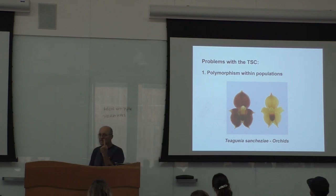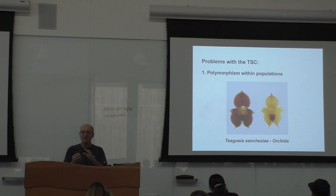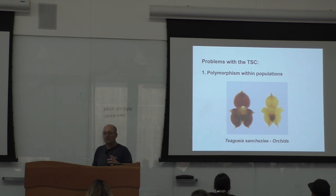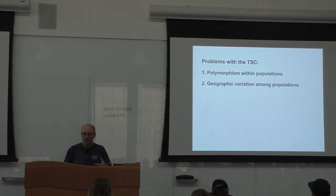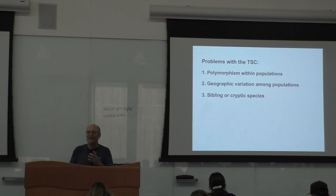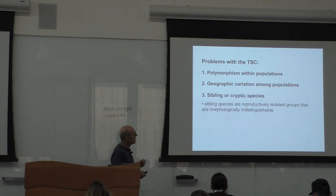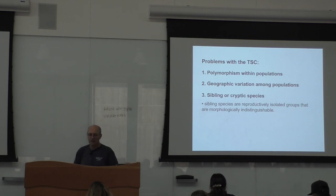So problems with the typological species concept. First of all, because you consider a single holotype and you want, if you say, okay, the species needs to look like the holotype. Now, the problem is that if you don't look like the holotype, then you are not a species anymore. And so there are polymorphisms within populations. So in this orchid, the flowers are different depending on the individual. There are geographic variations among the individuals. And there are sibling or cryptic species that look exactly the same, but they are genetically different. Of course, I cannot blame Linnaeus for not knowing that. But nowadays, it is a problem. Because if you look at the jar, it could look exactly like another one. But genetically, there would be two different species. So siblings are reproductively isolated groups that are morphologically indistinguishable. So that's what I was talking about.